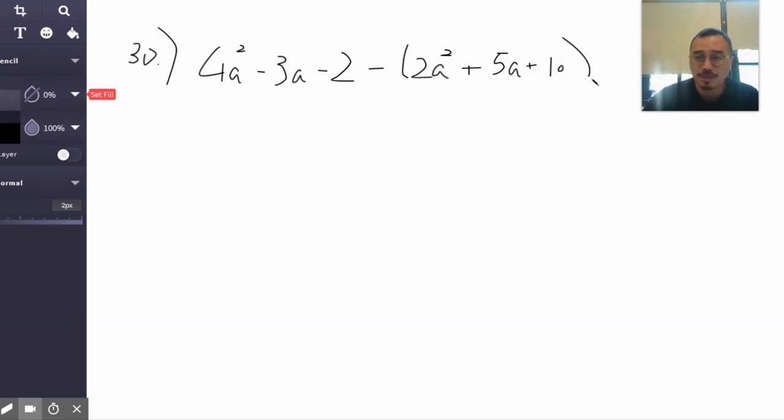That really serves as a negative, and you want to subtract this term, subtract the middle term, subtract the last term. In other words, you're distributing a negative one throughout. So I got 4a squared minus 3a minus 2.